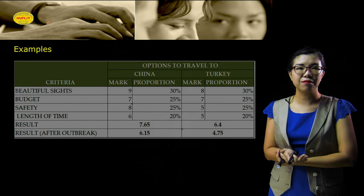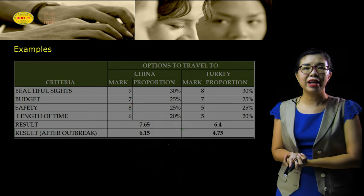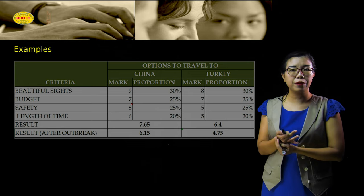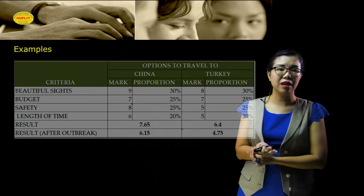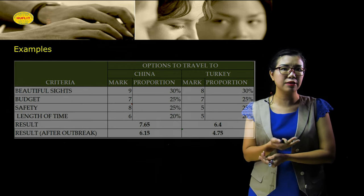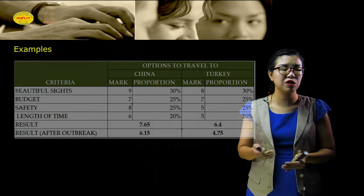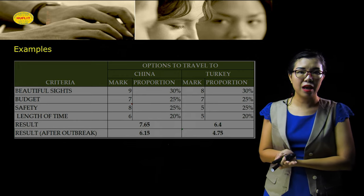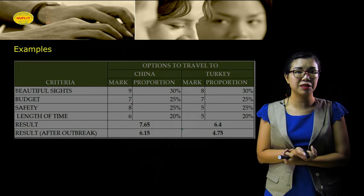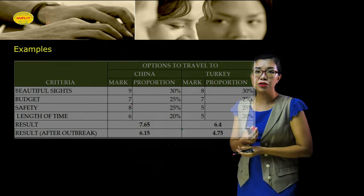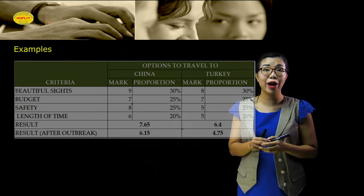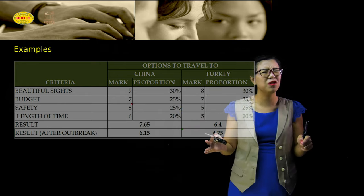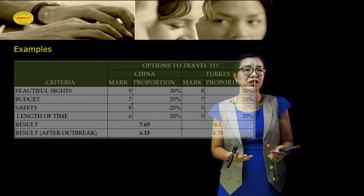The budget is weighted at 25%. Next is safety — you need to feel safe in the place you want to travel, so safety also consists of 25%. Finally, the length of time, meaning the length of the flight and your stay, is weighted at 20%. Now we need to rank and score each criteria based on the country. For example, comparing Turkey and China, China seems to have more beautiful sights than Turkey.